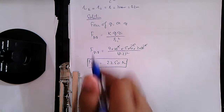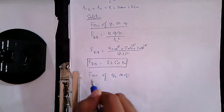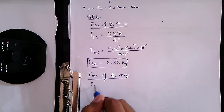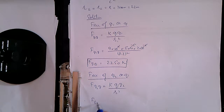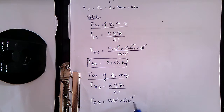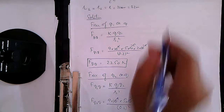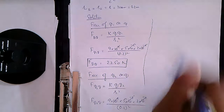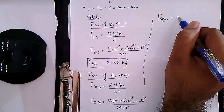Now write the second heading: Force of Q2 on Q. The formula is F(Q2,Q) = K × Q × Q2 / R². Substituting values: F = 9×10⁹ × 5×10⁻⁵ × 2×10⁻⁴ / (0.2)². The values are identical to the previous calculation, so the answer is also 2250 Newtons.